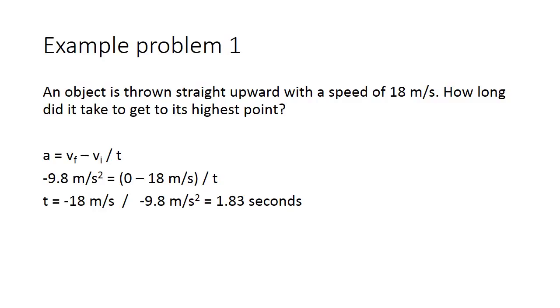Which is that the highest point has a velocity of 0, and that the acceleration, since the only thing acting on it is gravity once it's let go, is negative 9.8 meters per second squared. So we use, as you can see, a equals final velocity minus initial velocity over time.